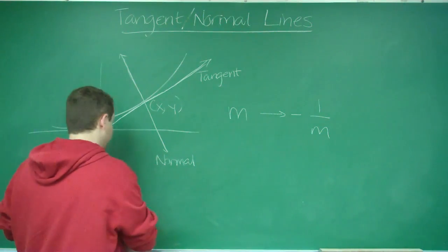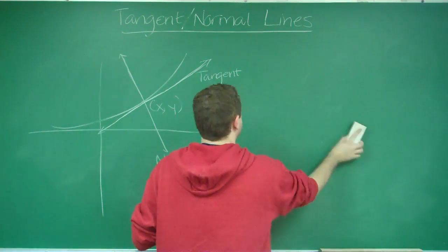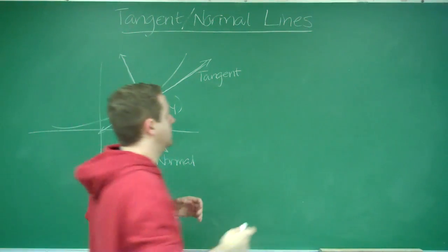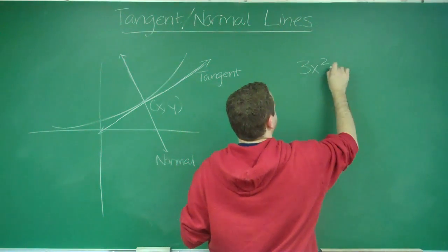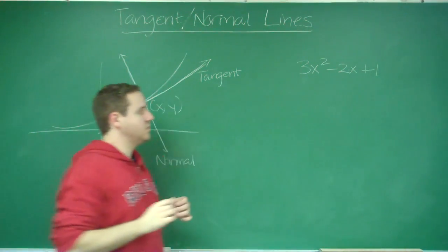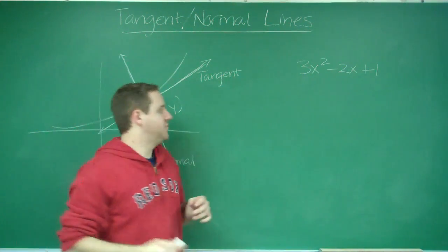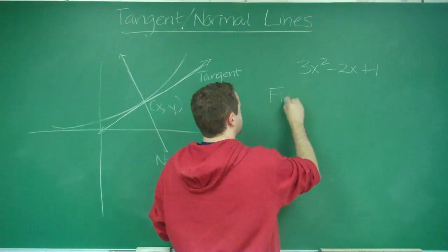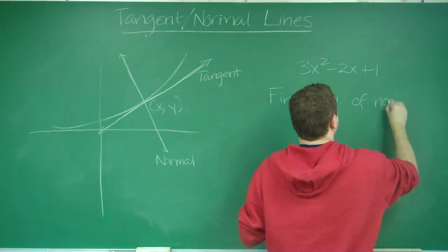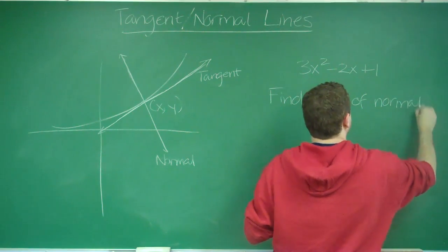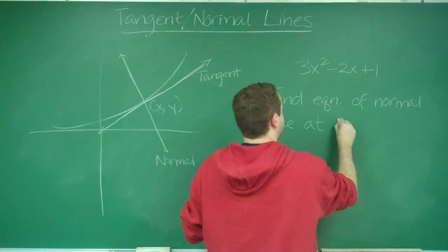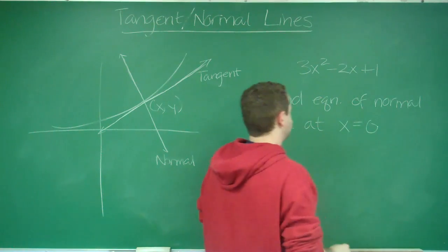Let's do a quick example. Let's say we have the function f(x) = 3x² - 2x + 1, and we were asked to find the equation of the normal line at x = 0.